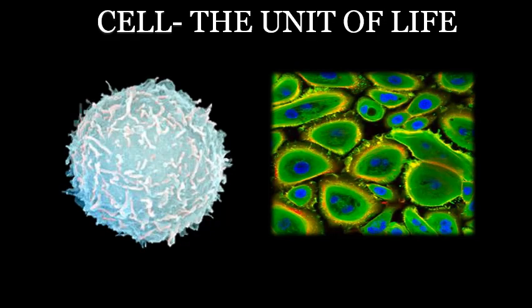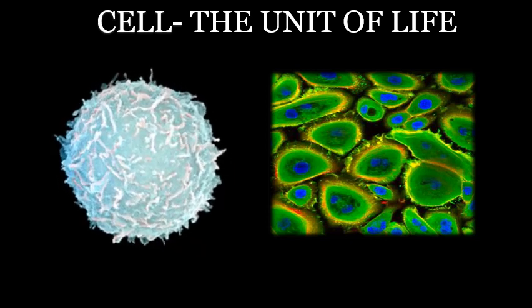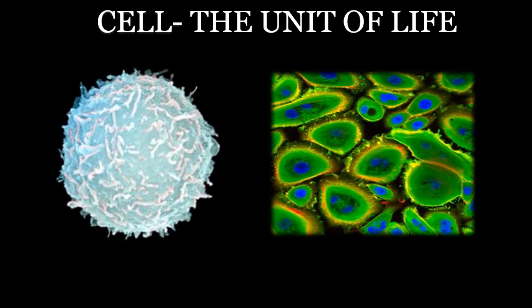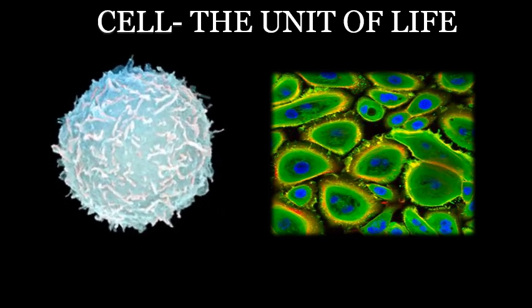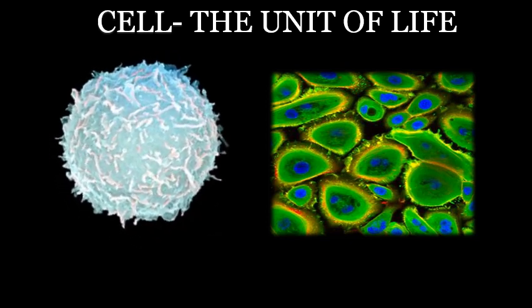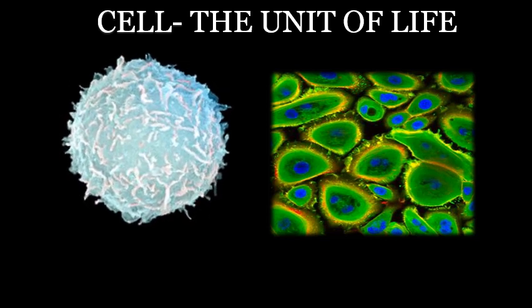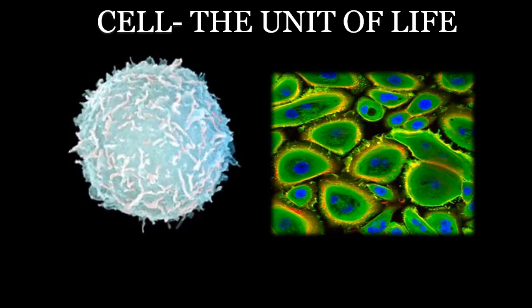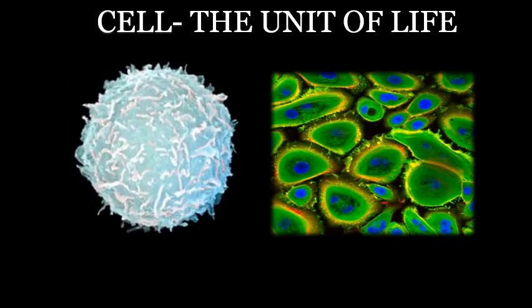Let us begin our journey into the world of the cell through this chapter called 'Cell: The Unit of Life,' provided by NCERT and the 11th standard textbook, which is Maharashtra Board of Biology, under the name of 'Cell Structure and Organization.' What you can see on the screen are human cells generated through electron microscopy and fluorescence microscopy. You can see how advanced technology allows us to study in so much detail.